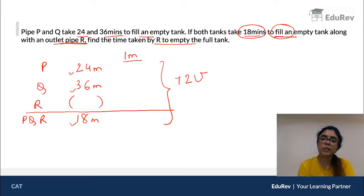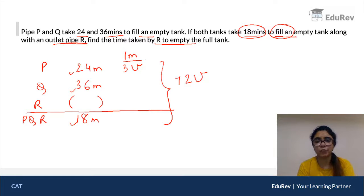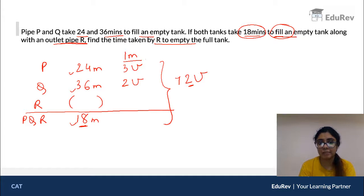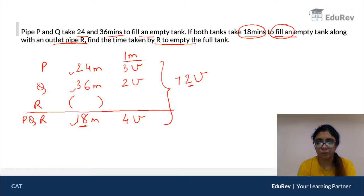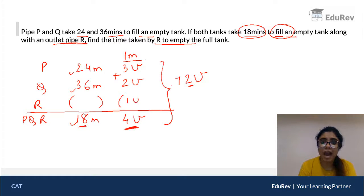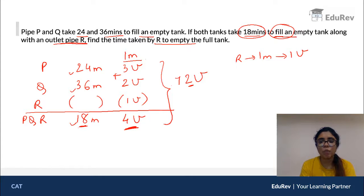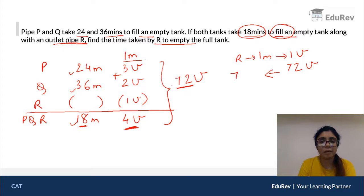In one minute: P fills 3 units (72/24), Q fills 2 units (72/36), so P and Q together fill 5 units per minute. The net result with all three open is 72 units in 18 minutes, which is 4 units per minute. So R must be emptying 1 unit per minute. To empty the full tank of 72 units, R takes 72 minutes.